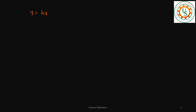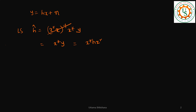So let me write that as well. We have y is equal to hx plus n. The least square estimator equation to get h-hat is: (x conjugate times x) whole inverse times x conjugate times y. This becomes just x conjugate times y, which expands to x conjugate times (hx plus n).